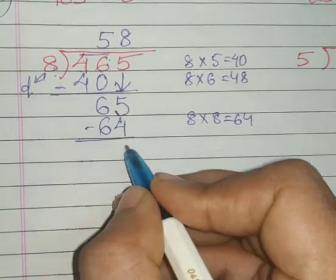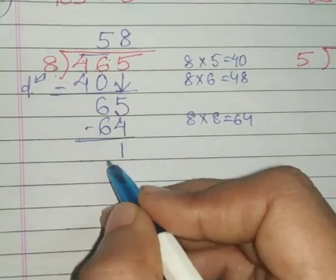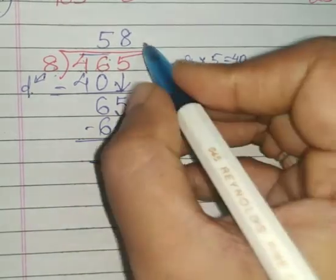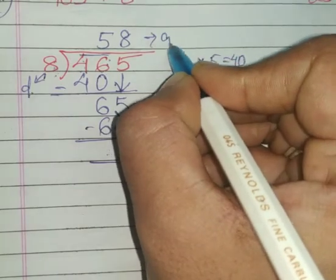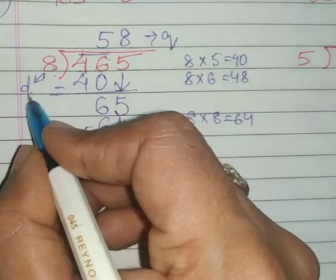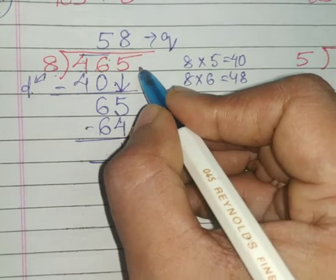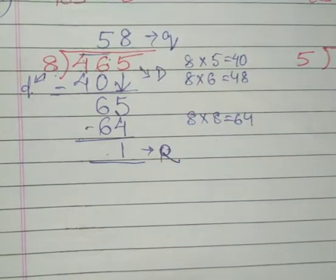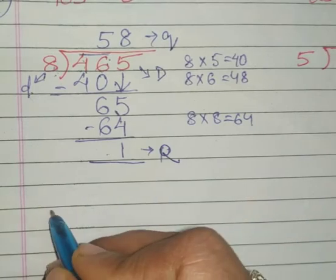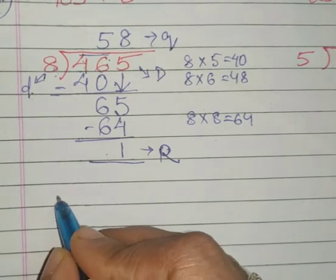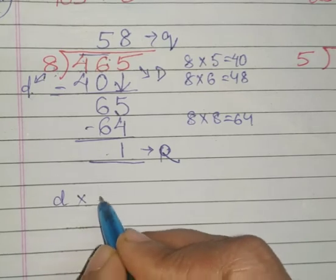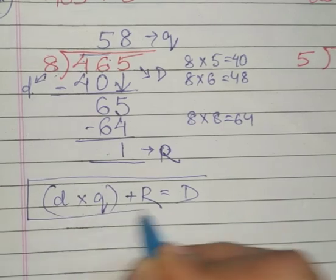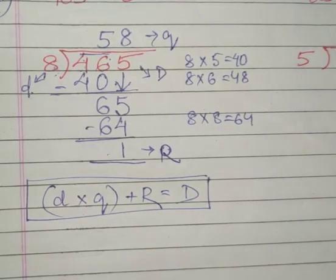So this is your remainder, this is your quotient, this is divisor, and this is your dividend. You can multiply and check this by the method or the formula: small d into q plus r is equal to capital D. This is your formula, you can go further and check it.